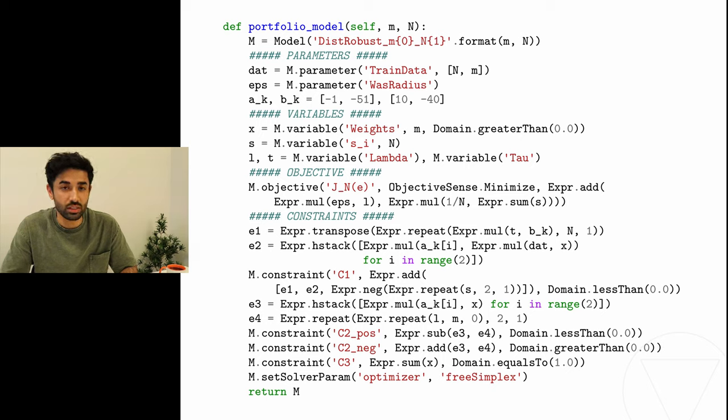To highlight the potential of parametric fusion, I have made a wrapper class around the fusion model. The skeleton of this wrapper class is as shown. We will cover each method but first we focus on the method called portfolio_model. The first thing we do during the declaration of the model is that we instantiate a model object. This is a fusion model object. Then we define the parameters for our model. The parameter dat corresponds to the n realizations of the uncertainty vector ξ. The parameter eps alludes to the Wasserstein radius and the parameters a_k and p_k are placeholders for values of the components of the loss function.